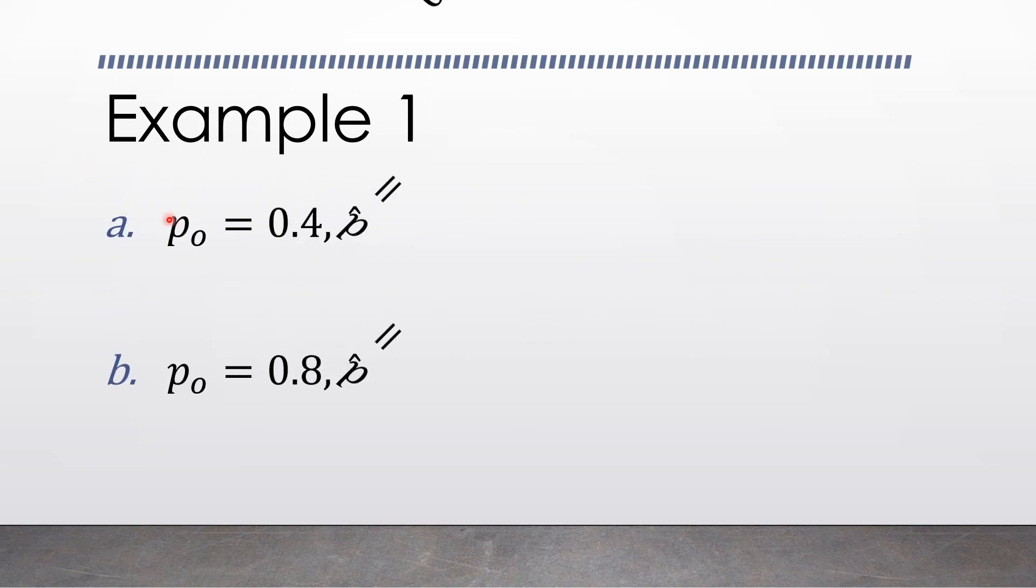the first one: we have the hypothesized proportion as 0.4, p-hat or the sample proportion is 0.5, and the sample size is 60. For the second one, we have the hypothesized proportion is 0.8, sample proportion is 0.62, and the sample size is 40.